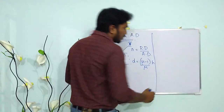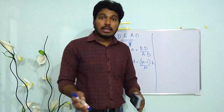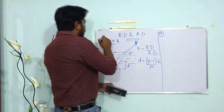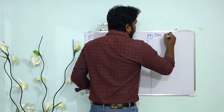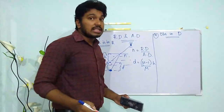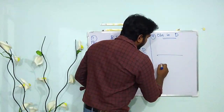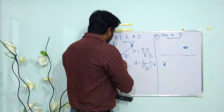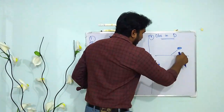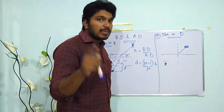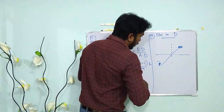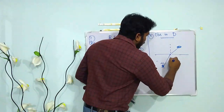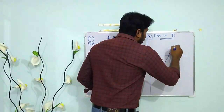Now let's take the second case where the observer is in the denser medium — for example, a fish looking outside, or a diver looking out. In this case, the observer is inside the denser medium and the object is outside.